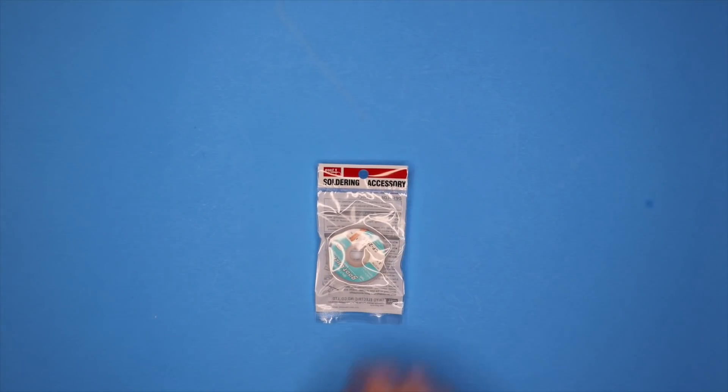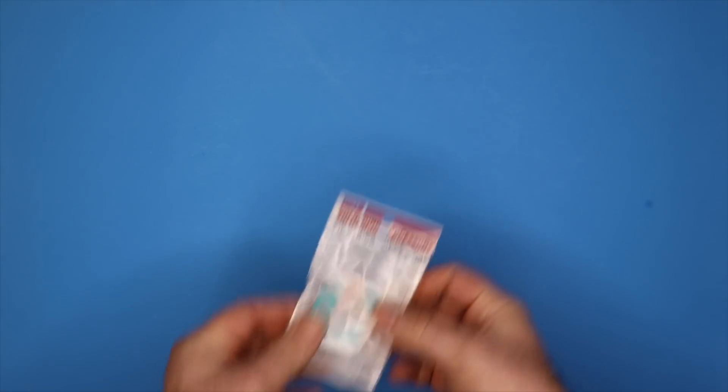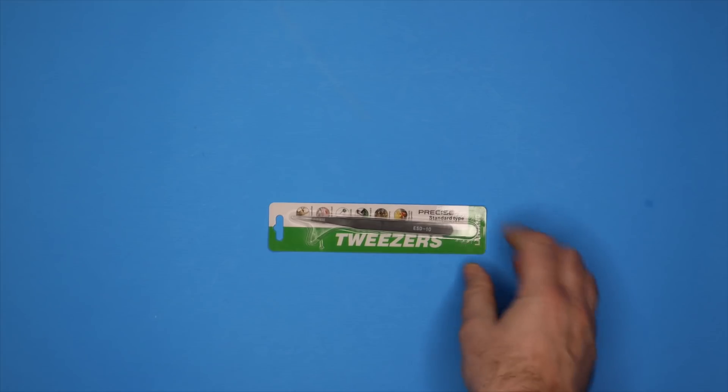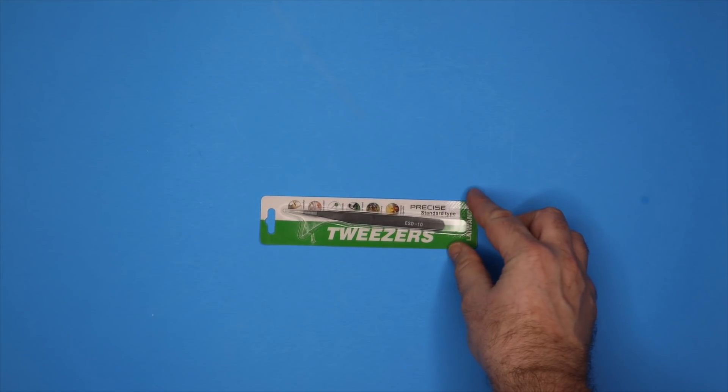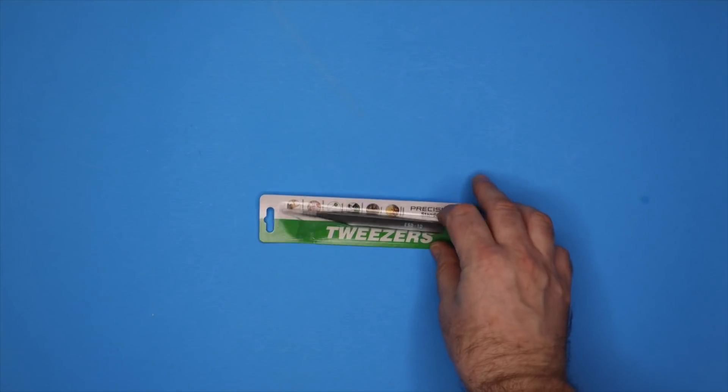Another item in this box is the little spool of desoldering wick, desoldering braid. That is always useful and also useful for soldering especially when you are doing some surface mount work is a pair of ESD safe tweezers.